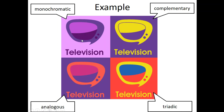Here's an example: in quadrant one we have complementary colors — purple and yellow directly across from each other. Quadrant two has a monochromatic scheme — all different tints and shades of purple. Quadrant three has analogous — reds, purples, and oranges all on the same side of the color wheel. Quadrant four has triadic — red, yellow, and blue equally spaced from each other. That's your assignment — let me show you how to do it.